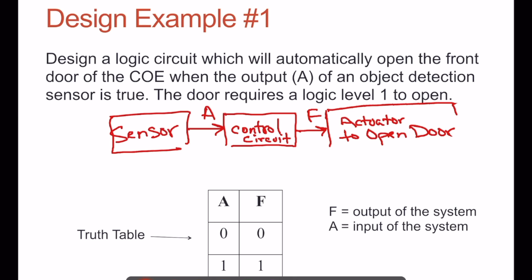This is a very simple logic circuit. If the sensor's 1, there's a person in front of the door, we want to open the door. If there's not a person in front of the door, we don't open the door. So if the input A is 0, the output's going to be 0. If there's a person in front of the door, a 1, then the output's going to open the door.